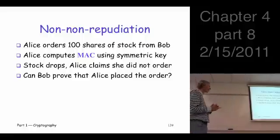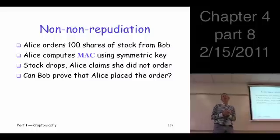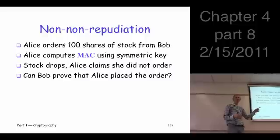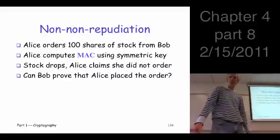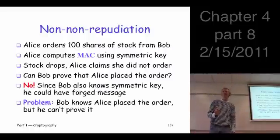Because Bob couldn't invent the whole thing since he knows the key. That's right. Bob knows the key that was used to compute the MAC, so Bob could have faked the whole thing. That's really the point here. Now, it's kind of funny because Bob knows he didn't fake the whole thing, but he can't prove that because he has the key, so he could have faked the whole thing.